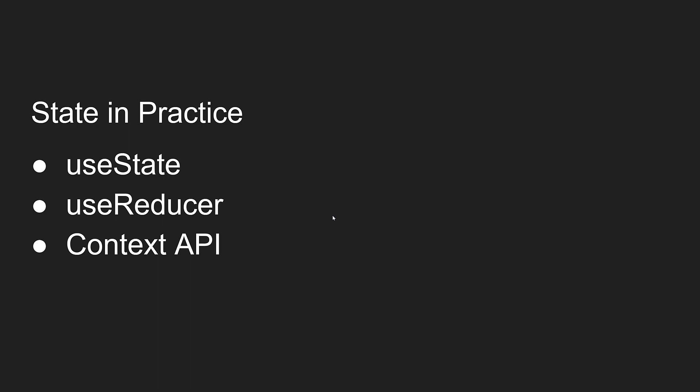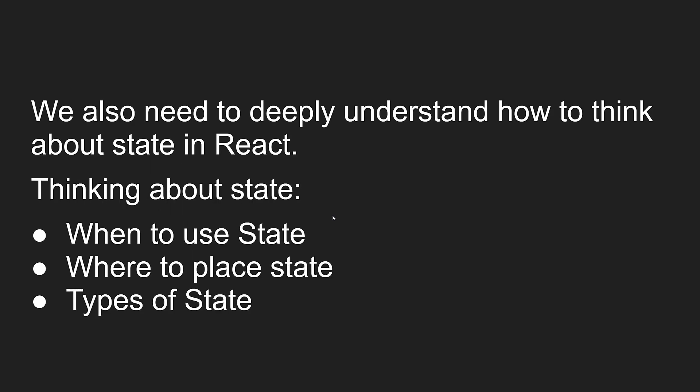We also need to deeply understand how to think about state in React — this is very important for front-end developers learning React. Thinking about state means: when to use state, where to place the state, and the types of state available. These are the three things you need to think about before implementing state in React.